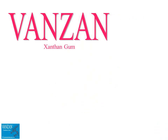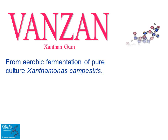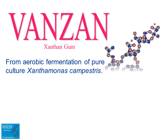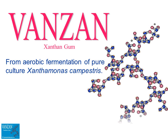Today, Vanzan xanthan gum is produced by the aerobic fermentation of pure culture Xanthomonas campestris. After fermentation, the broth is sterilized and the gum is recovered by precipitation with isopropyl alcohol. It is then dried, milled, and packaged under sterile conditions.